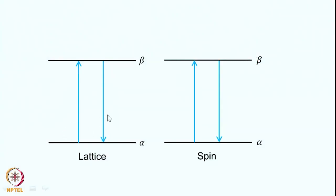Everything in your sample other than the particular spin system is called the lattice. The lattice has all kinds of energy levels. Every time there is a downward transition of the spin system, the lattice takes up that energy, causing an upward transition in the lattice. Conversely, if there is an upward spin transition, there is a downward transition in the lattice. Therefore the spins and the lattice are coupled — there is energy exchange between spin and lattice — which allows the redistribution of populations in the spin system.